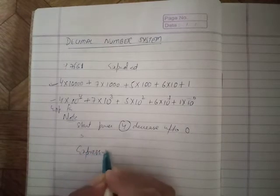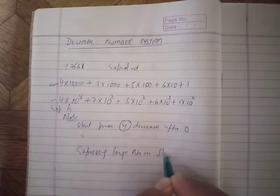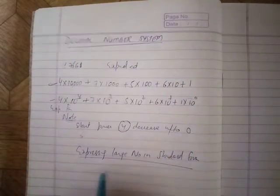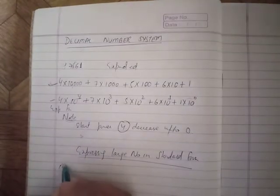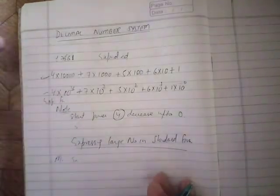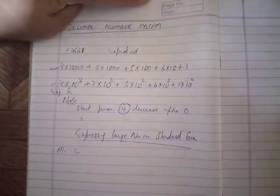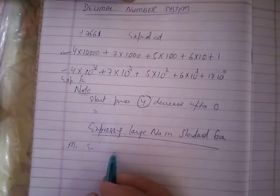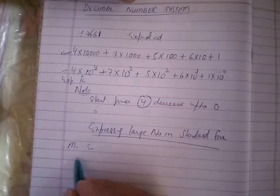Next, we will express large numbers in standard form. This is for bigger numbers - larger numbers. It's good to write the number in standard form. For example, this number: 597600000.